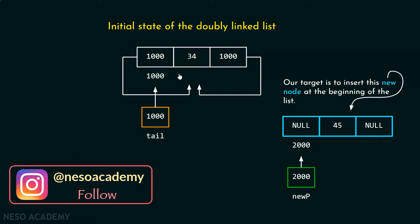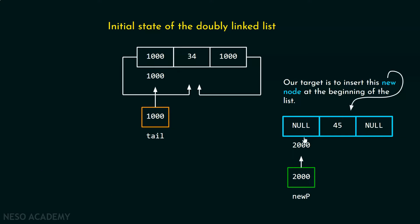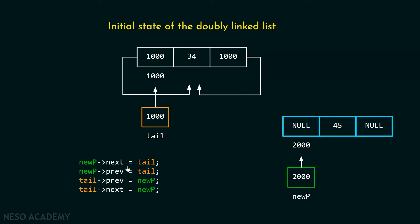We have just one node in the list and we want to insert this new node at the beginning. Here you can see there is a pointer new p pointing to this node. For this purpose, we need these four lines of code: new p next equal to tail, new p prev equal to tail, tail prev equal to new p, and tail next equal to new p.